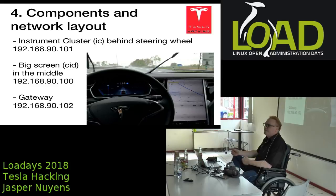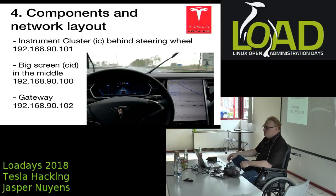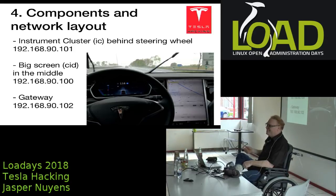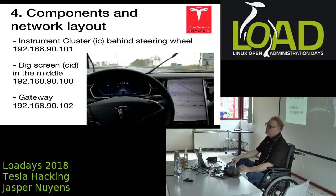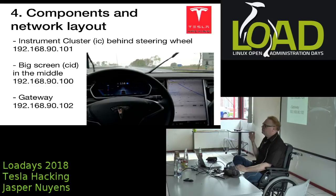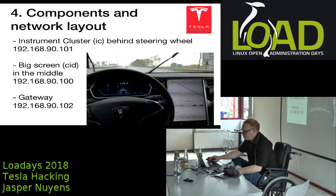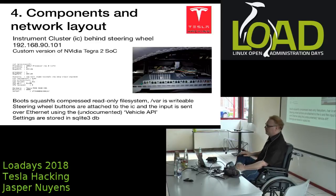The gateway runs FreeRTOS and has an IP ending in .2. It acts as something in between the Linux systems and the car itself. The main bus used in the car industry is the CAN bus, and Tesla has six CAN buses. The gateway acts as a bridge to those CAN buses. The IC and CID can send instructions to the gateway using a REST API via undocumented vehicle API, which then puts things on the CAN bus.